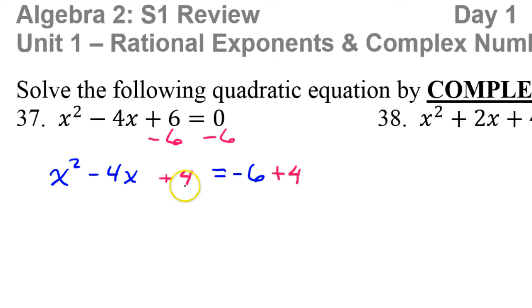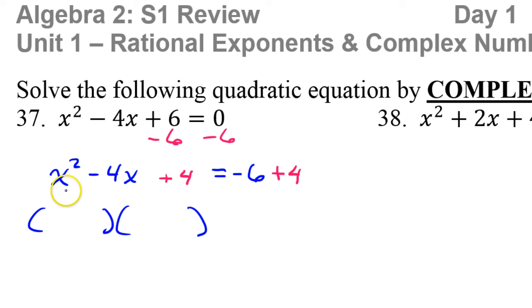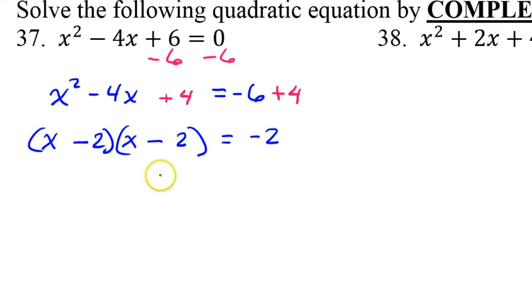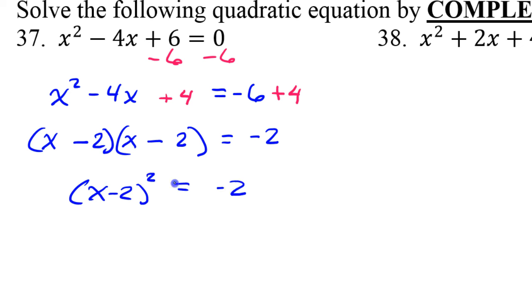The point of putting this number here is that if you factor this, it's now going to factor as the same thing twice. x squared is clearly x times x, and 4 is going to be 2 times 2. But to get a negative 4 middle, we need negative 2 and negative 2. Notice it's the same thing twice. Meanwhile over here, I've got negative 2, because negative 6 plus 4 is negative 2.